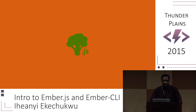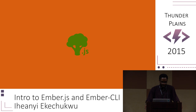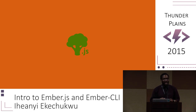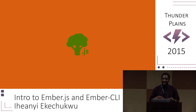Broccoli is an asset pipeline build system for your front-end web applications. The beautiful thing about Broccoli is that it only rebuilds the parts of your application that have changed. So as your application scales, you won't get a performance hit from building continually while Ember CLI is watching — it just rebuilds the parts of your app that actually changed.